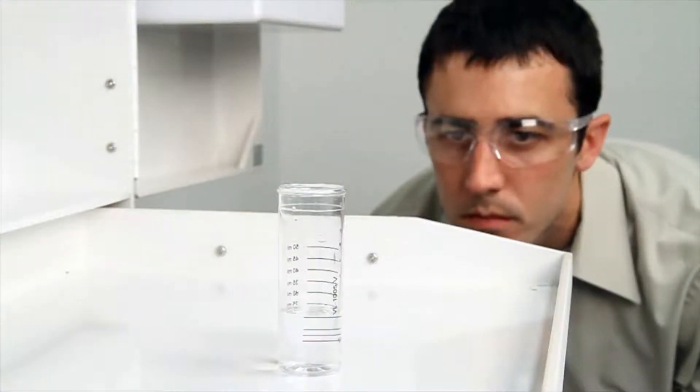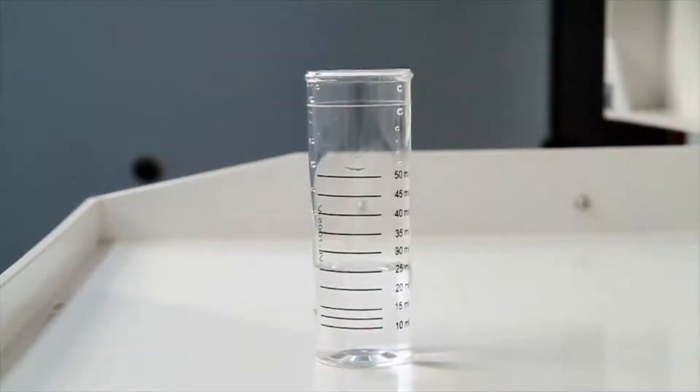When performing a drop count titration, a white background can provide contrast to better see the color changes. A cabinet tray or a white paper towel can provide that contrast.